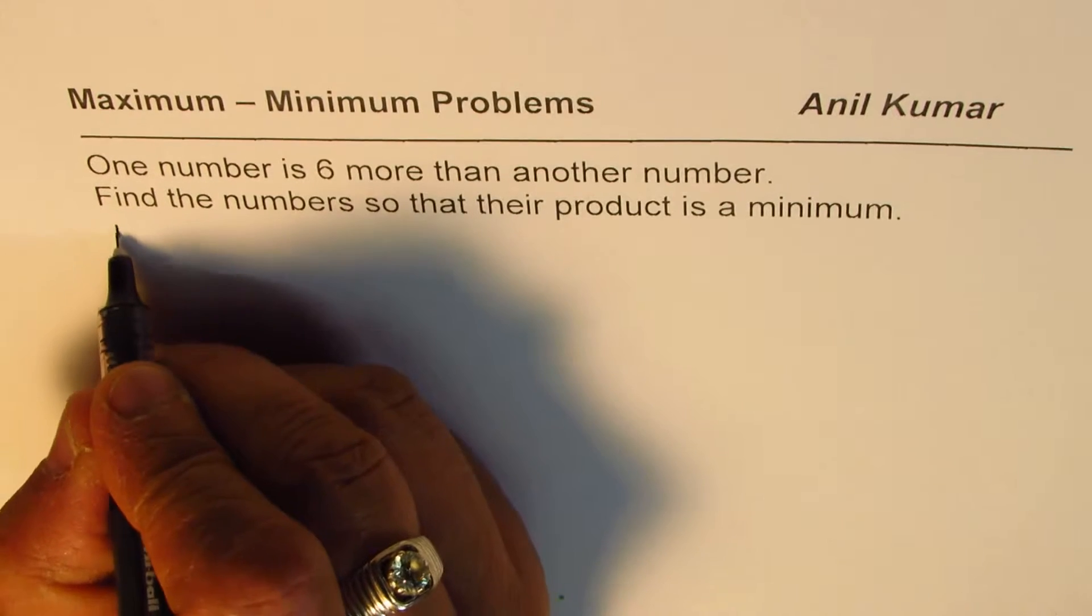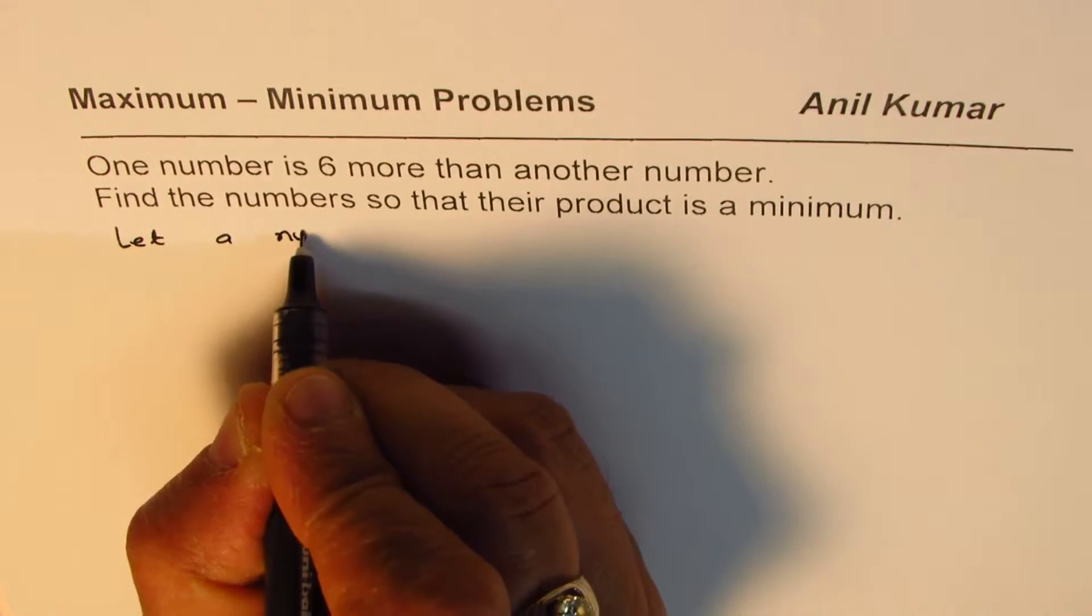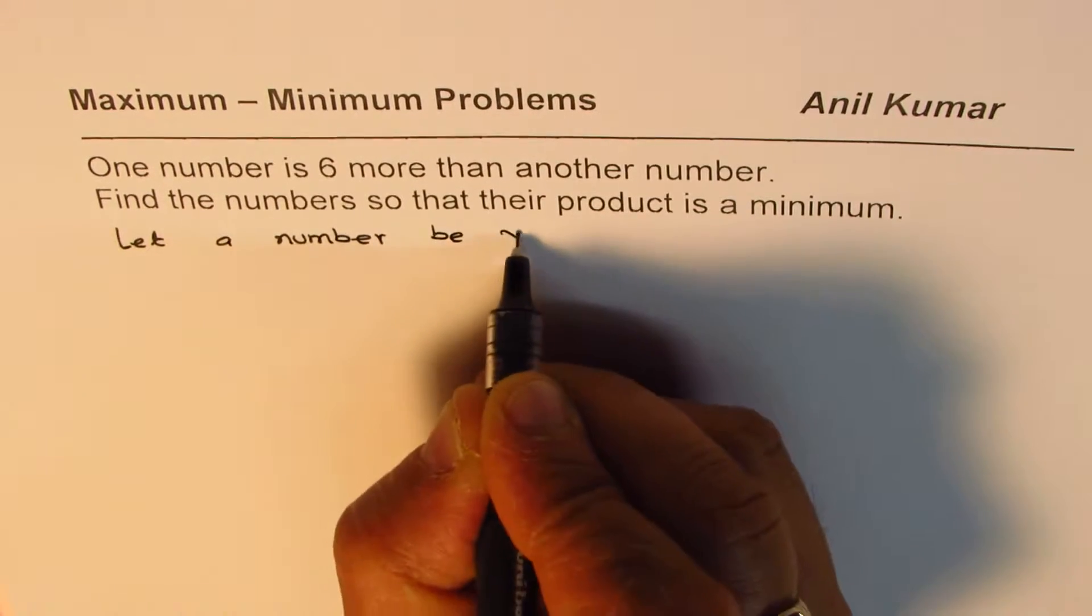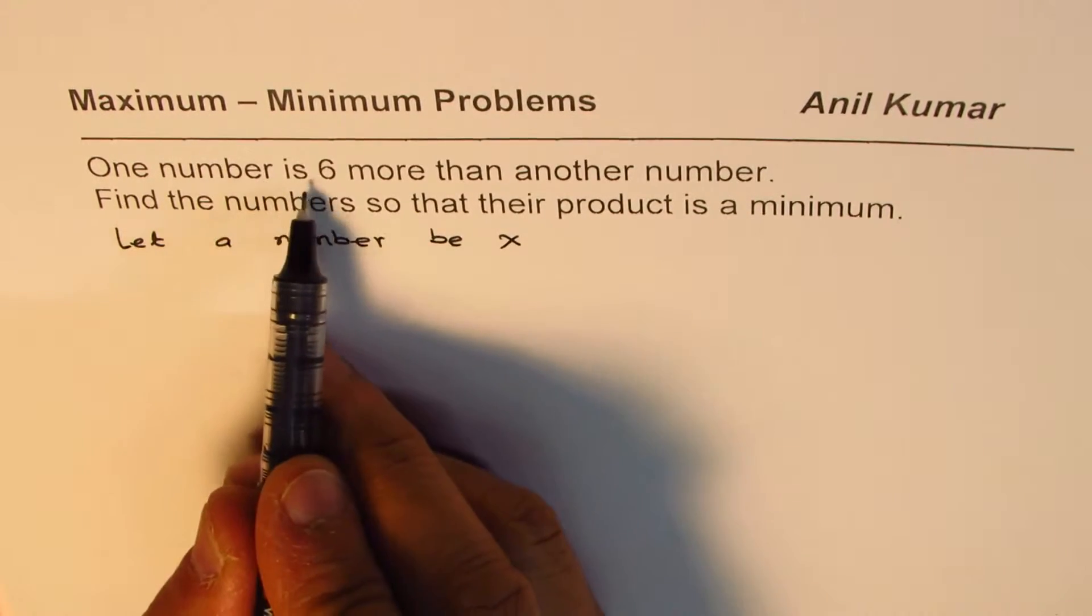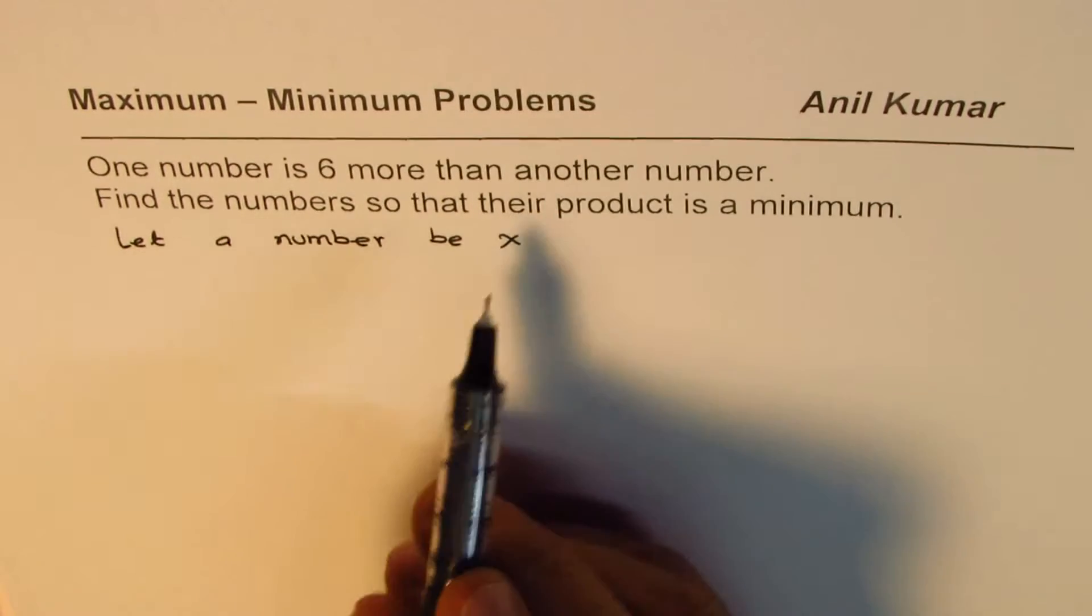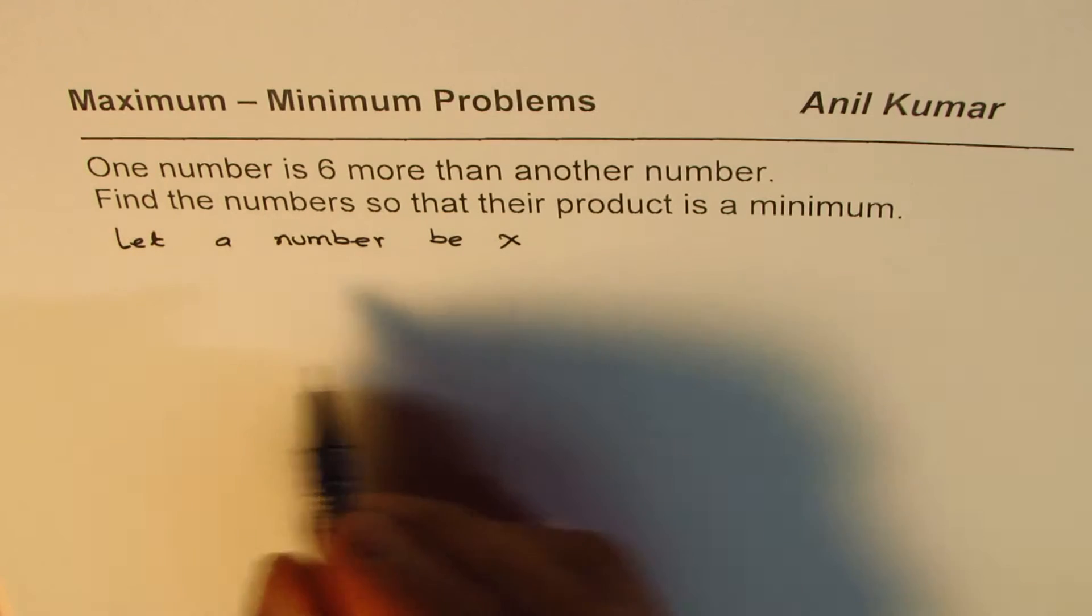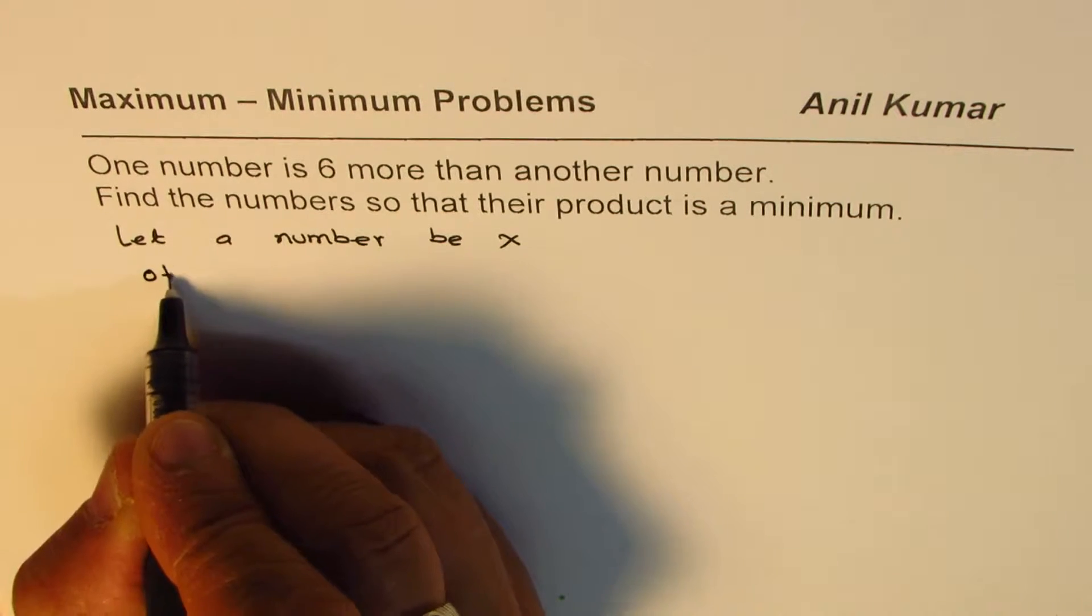So let's begin by defining the numbers. We say let a number be X. So one number is six more than another. So this is one of our numbers. One number is six more than another, so we say the other number will be...